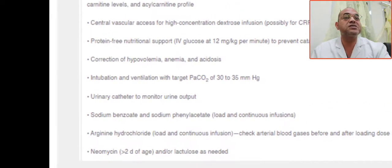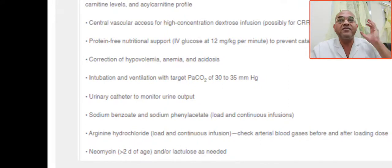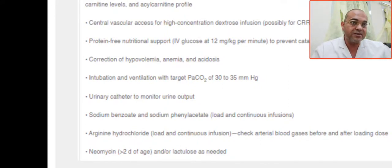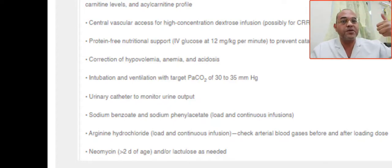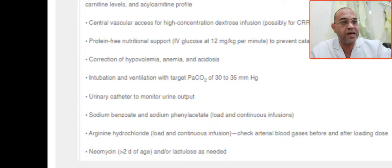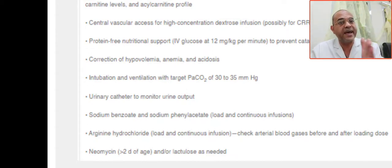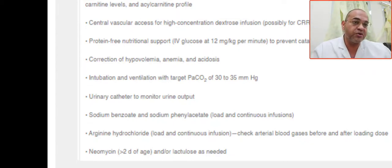Start specific medications — nitrogen scavengers — to increase ammonia clearance: sodium benzoate and sodium phenyl acetate, given as a loading dose followed by continuous infusion; and arginine hydrochloride, also given as loading and continuous infusion. Check blood gas before and after the loading dose of arginine.